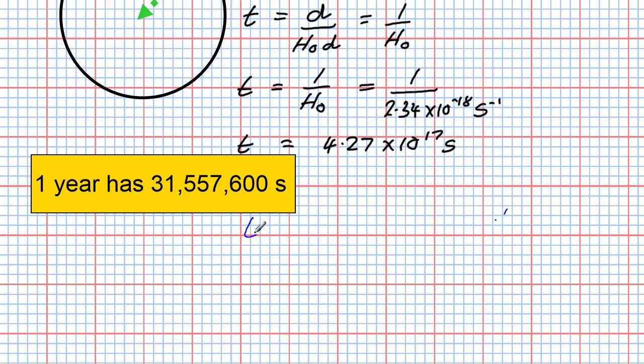I'll do this in blue. Time t is equal to 4.27 times 10 to the 17 seconds divided by how many seconds in one year: 31,557,600 seconds per year.